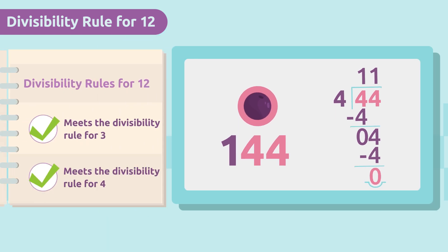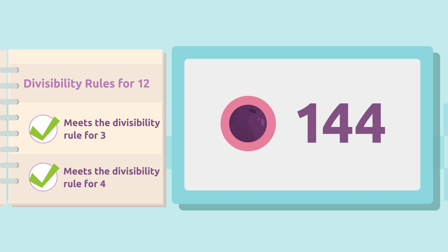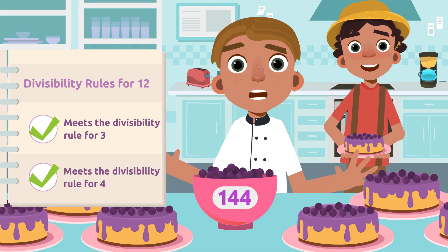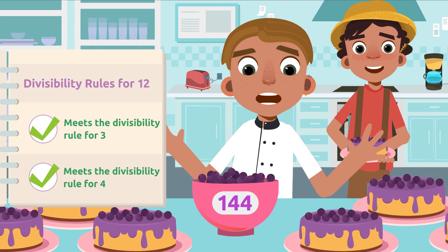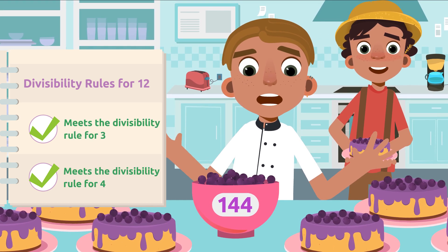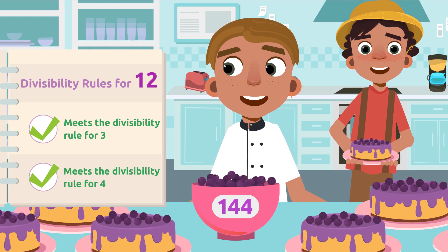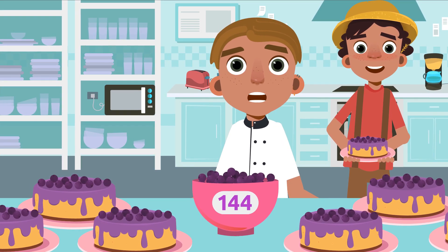144 is divisible by four. Let's go back into the kitchen! Since 144 is divisible by three and four, that means it is also divisible by 12 — just what we needed. Each tart will be complete!